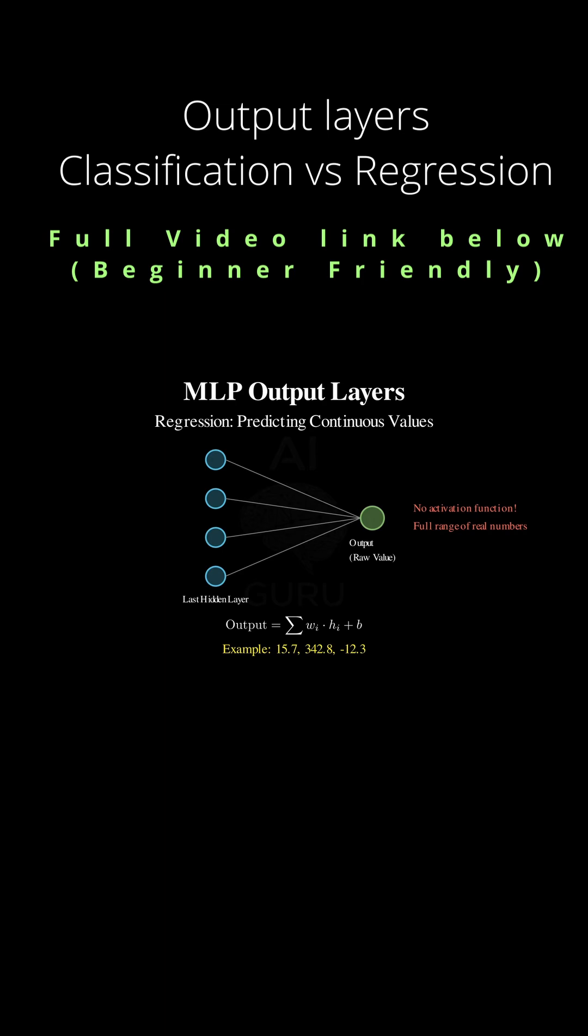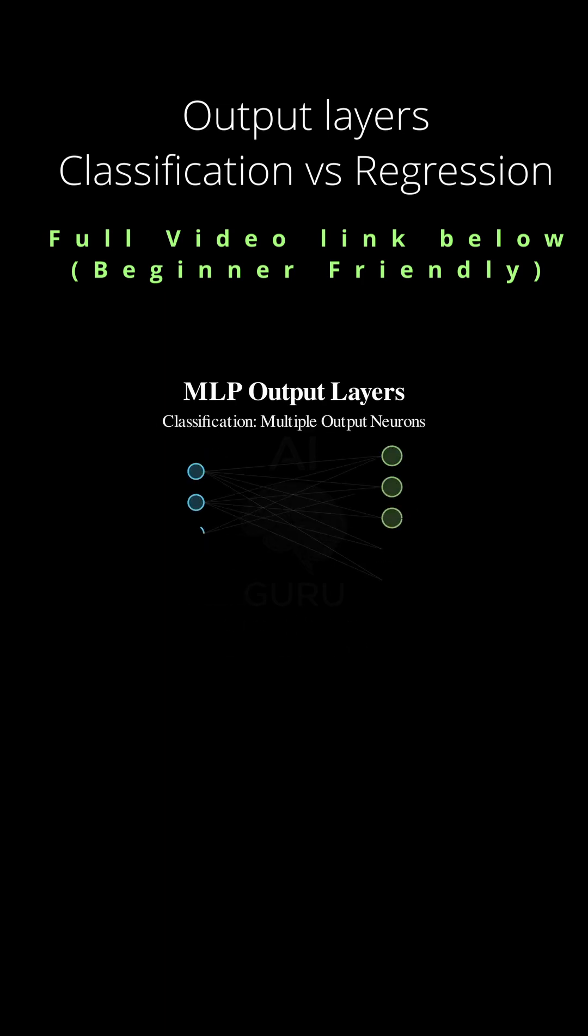And the other configuration is for classification tasks, which are probably more common for these kinds of MLPs. Yeah, for sure. Classification requires one neuron for every class the network has to distinguish. So if it's identifying 10 types of animals, you need 10 output nodes. And to manage the targets, we use a standard trick called one-hot encoding.